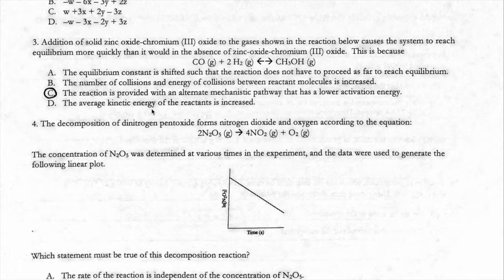In three, it says addition of solid zinc oxide, chromium oxide to the gases shown in the reaction below causes the system to react more quickly than in the absence of it. So zinc oxide, chromium oxide is acting as a catalyst. What catalysts do is they provide an alternative mechanism that has a lower activation energy. We didn't really talk about that it provides an alternate mechanism, but we did talk about the fact that a catalyst lowers the activation energy. So C is going to be your answer.